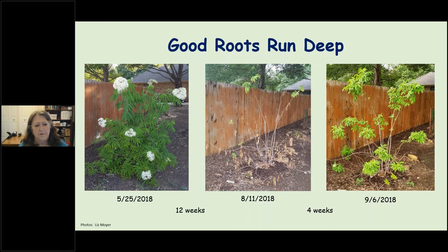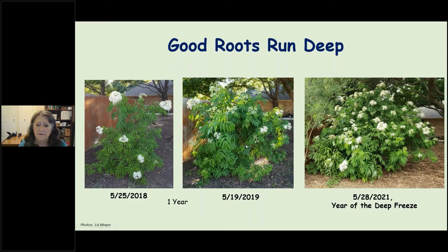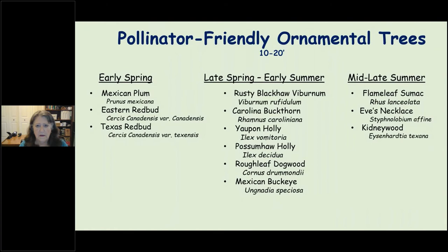Here's an elderberry my husband planted outside our fence in a non-irrigated area — beautiful in May 2018, then the hot dry summer hit and it lost its leaves, but by September it was recovering. The very next year it was thriving. This year it made it through the deep freeze without blinking and it's putting out berries like crazy. That's what good roots will do for you.